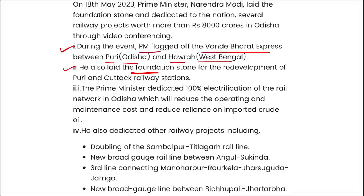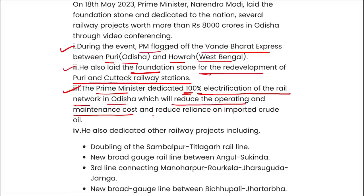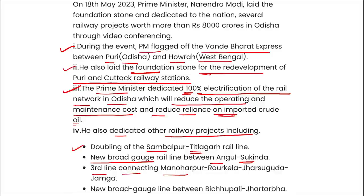He also laid the foundation stone for the redevelopment of Puri and Cuttack railway stations. Third, the PM dedicated 100% electrification of the rail network in Odisha, which will reduce operating and maintenance costs and reduce reliance on imported crude oil. He also dedicated other railway projects including doubling of the Sambalpur-Titlagarh rail line, new broad gauge line between Angul and Sukhinda, third line connecting Manoharpur-Rourkela, and new broad gauge line between Bichupali and Jharsuguda.